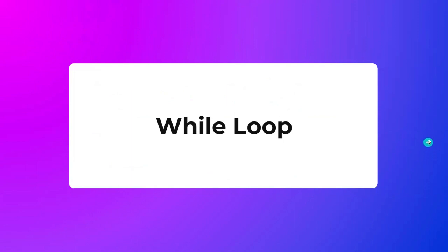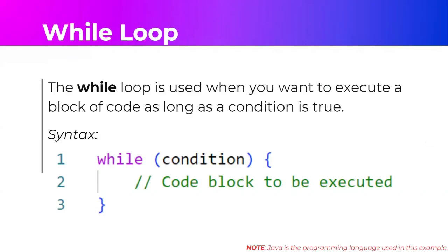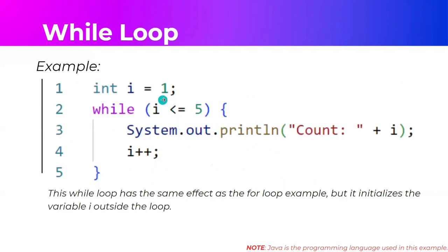Now let's look at the while loop. The while loop is used when you want to execute a block of code as long as a condition is true. Converting the earlier for loop example: we do the initialization outside the loop, the printing is inside the while loop, and the incrementation is also inside the while loop. The output would be the same as our for loop.